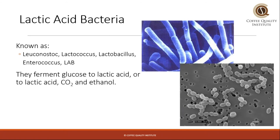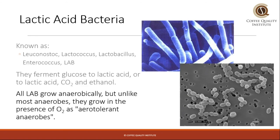The first one is the lactic acid bacteria. It's named this because these bacteria ferment glucose to lactic acid, or to lactic acid, carbon dioxide, and ethanol. So they take a carbohydrate and use it for their own metabolism, and there are byproducts — for example, carbon dioxide and ethanol. This is a large group of bacteria, sometimes just called LAB. They all grow anaerobically — without oxygen — but they have a unique characteristic where they also can grow in the presence of oxygen. So they're known as aerotolerant anaerobes, meaning they prefer anaerobic environments but can tolerate oxygen.